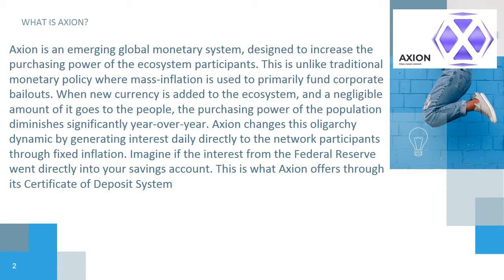What is Axion? Axion is an emerging global monetary system designed to increase the purchasing power of their ecosystem participants. This is unlike traditional monetary policy where mass inflation is used to primarily fund corporate bailouts. When new currency is added to the ecosystem, the amount that goes to the people is negligible, and the purchasing power of the population diminishes significantly year over year.